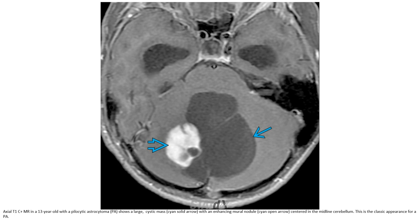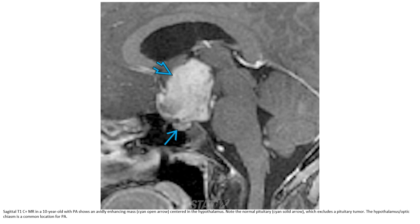This is the T1 C-plus image in a 13-year-old, showing a large cystic mass with an enhancing mural nodule centered in the midline cerebellum. This is the classic appearance for a pilocytic astrocytoma. A T1 C-plus image in a 10-year-old with PA shows a heavily enhancing mass centered in the hypothalamus with a normal pituitary, which excludes a pituitary tumor. The hypothalamus and optic chiasm is a common location for pilocytic astrocytoma.